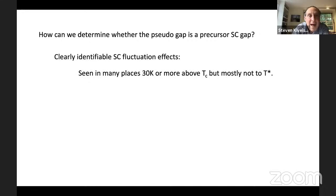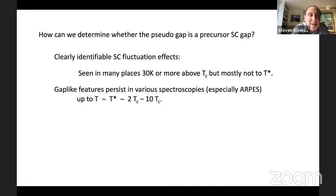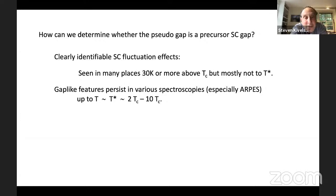The gap-like features persist in various spectroscopies, especially ARPES, up to temperatures of order some T*, which can be two or even ten times TC. The question is whether we can associate these gap-like features with precursor pairing. There are some reasons to think one can. The pseudogap has what the speaker calls a 'magnitude of D-wave form': the pseudogap is certainly larger out near the antinodal regions where the D-wave gap has its maximum, and smaller or even vanishing in the nodal direction where the D-wave gap has its nodes.